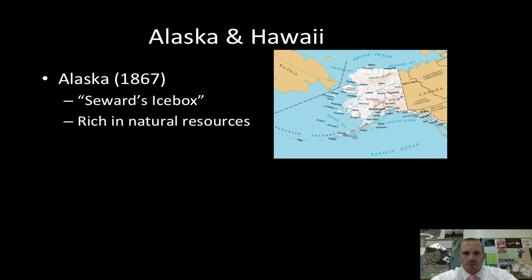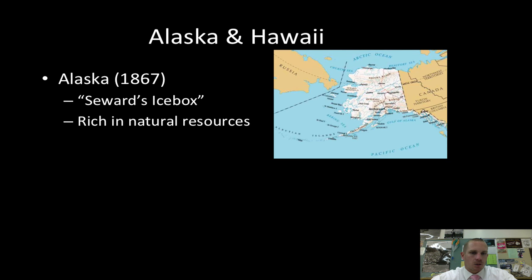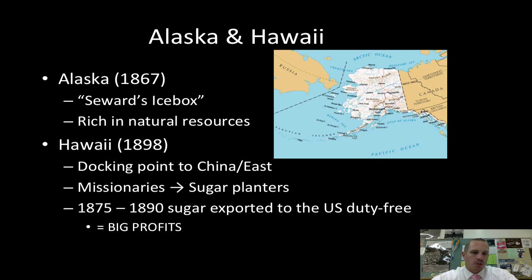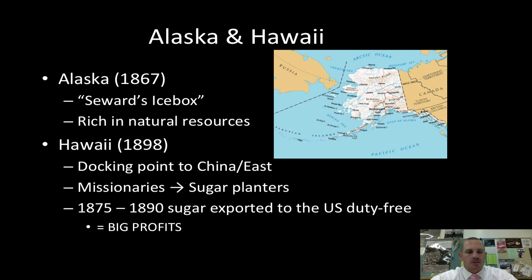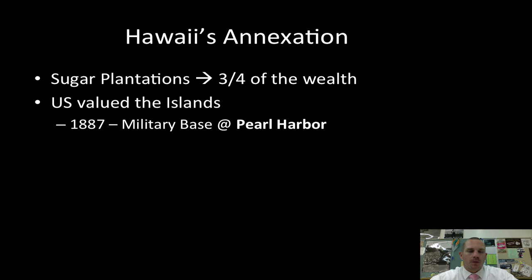You can see Alaska is very close to Russia, and the natural resources are more in the interior while the major population is on the coastline. Hawaii, 1898, has been a docking point to China and other countries in the east. Early on, we sent missionaries there, and the descendants of those missionaries became sugar planters. They imported foreign labor and became extremely rich. From 1875 to 1890, there's no tax on exporting sugar to the United States, which made these planters extremely wealthy. However, after 1890, things changed, and there became talk of annexation.